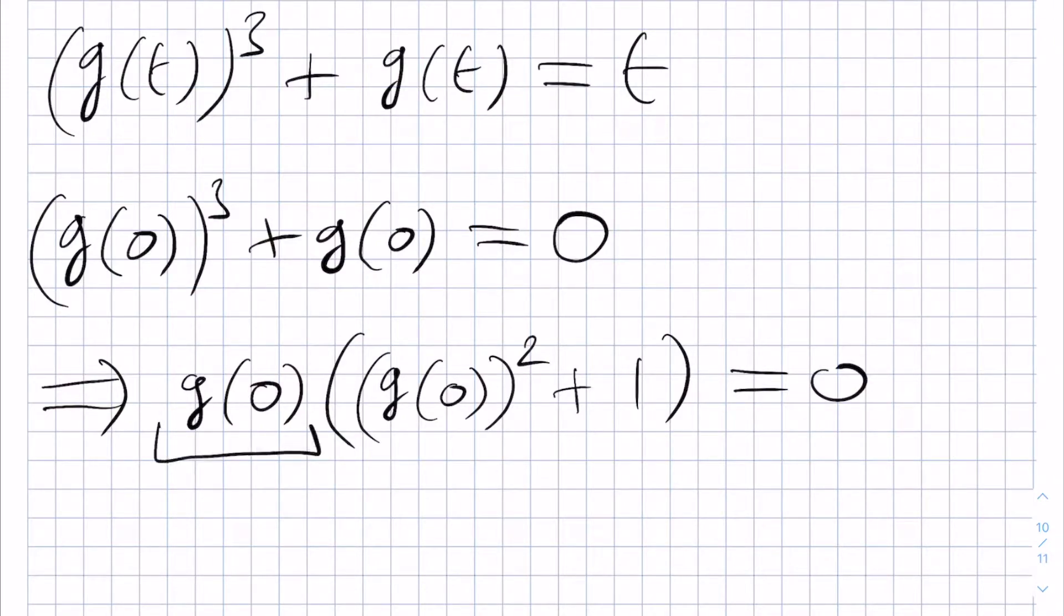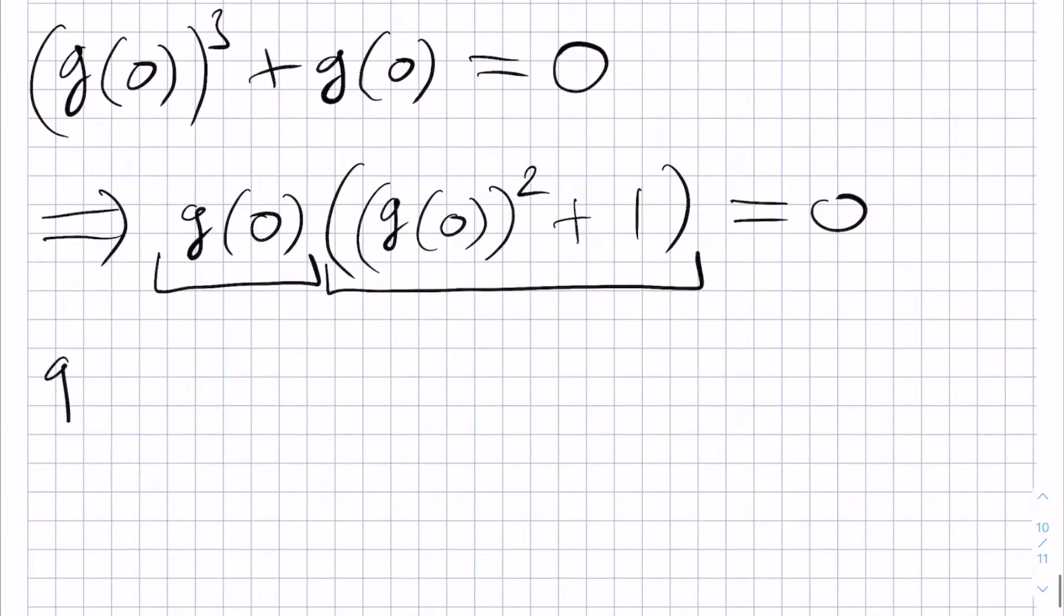Either this is 0 or this is 0. Because g is a real function, this implies that g(0) is equal to 0, because the only value of g(0) that solves this equation is plus or minus i, which are not real.